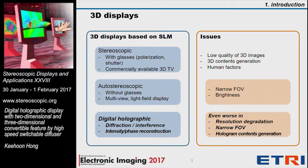Both stereoscopic and auto-stereoscopic displays are based on stereopsis to provide a 3D image to observers. On the other hand, the holographic display is based on the diffraction and interference of light, so it can reconstruct full characteristics of light, including intensity and phase information. All these 3D displays have issues of low quality 3D images, lack of 3D content, and human factors. Unfortunately, the digital holographic display has worse characteristics in those issues.